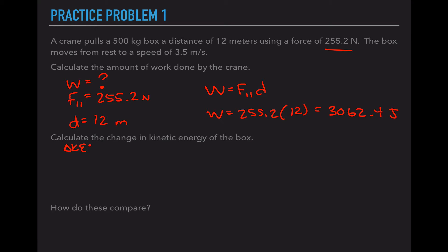Now it's asking us to calculate the change in kinetic energy. I need the mass, which is 500, the initial velocity which is zero, and the final velocity which is 3.5. Change in kinetic energy equals 1/2 mvf² minus 1/2 mvi². I can cross off this last section because vi is zero. So change in kinetic energy is 1/2 times 500 times 3.5², and our change in kinetic energy is 3062.5 joules. We're simply 0.1 joules off. That's close enough that we can say they're the same.